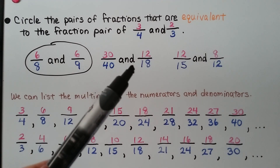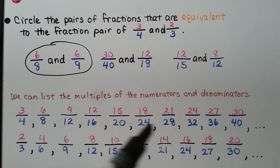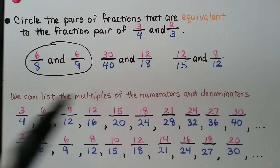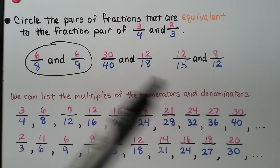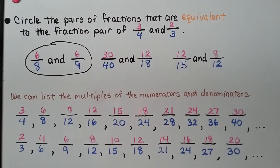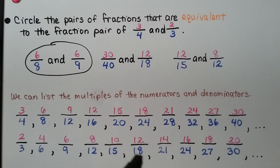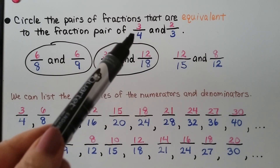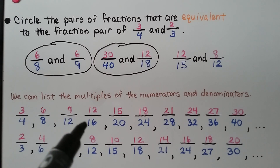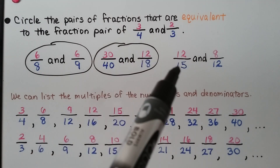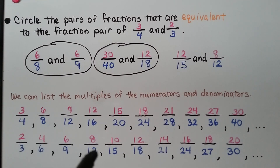How about the pair 30/40 and 12/18? Is 30/40 equivalent to 3/4? Yes — we multiply 3 times 10 and 4 times 10, multiplying numerator and denominator by 10 to get 30/40. What about 12/18 for 2/3? Yes — we do 2 times 6 and 3 times 6, multiplying numerator and denominator by 6 to get 12/18. Is 12/15 equivalent to 3/4? When we look, it says 12/16: 3 times 4 is 12 and 4 times 4 is 16 — so 12/15 is not equivalent to 3/4. 8/12 is equivalent to 2/3, but the pair needs to both be equivalent, so this is not an equivalent pair. We know 6/8 and 6/9 are, and 30/40 and 12/18 are.